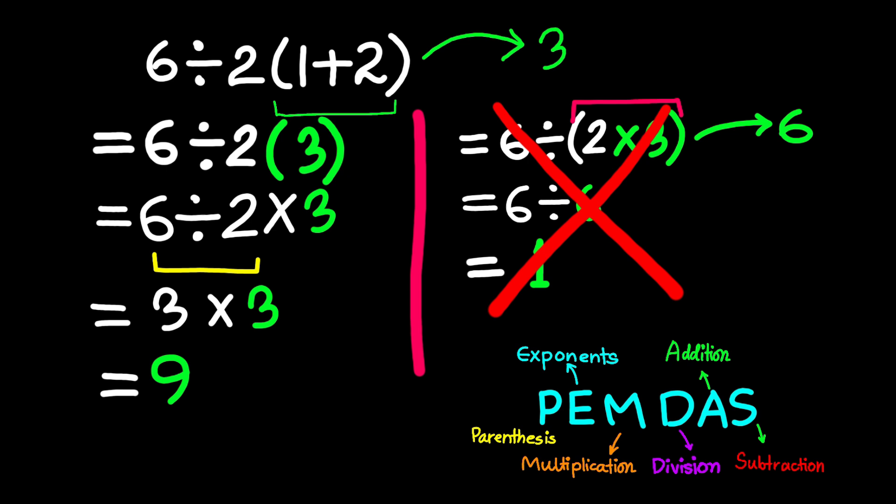Again, it's super tempting to group 2 times 3 together and treat it like one chunk, but unless there are parenthesis around that whole thing, we follow the left to right rule for division and multiplication. So the final answer to this problem is 9.